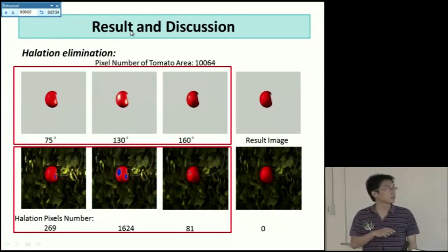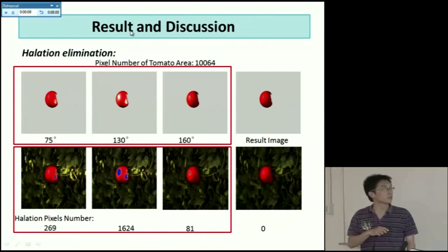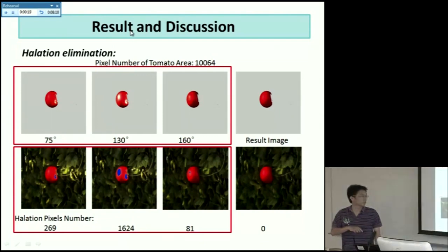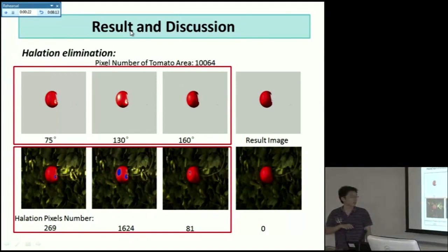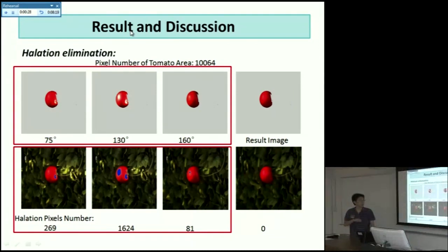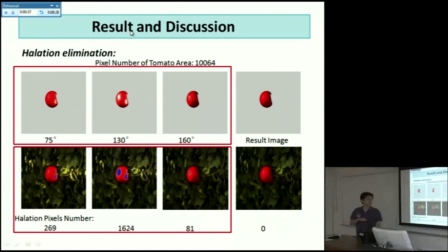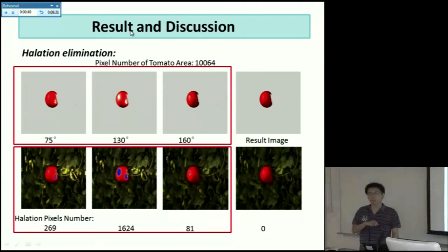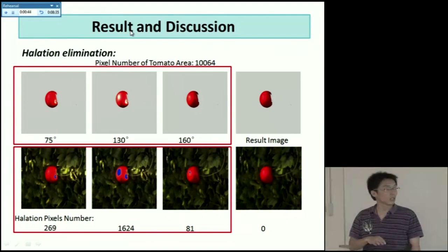But if we only focus on the tomato area, the total number of the pixels of the tomato area is about 10,000. And the halation pixels number in this image on the tomato surface is about 260. And in this worst situation, it's about 1,600. And in this image, there is only 81 halation pixels on the tomato surface. And in our result image, there is no halation pixels detected on the tomato surface. Which means by this way, all the halation is being eliminated on the tomato surface.